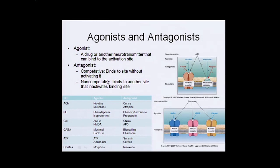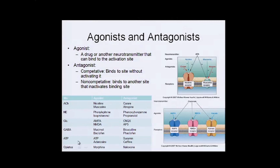Or it could be a non-competitive antagonist, where it binds to another site that causes a protein conformation change and makes it so acetylcholine can't bind. Then you have another example with glutamate, where you have various receptors where either the AMPA receptor and glutamate can bind and activate it, the NMDA and glutamate, or the kainate and glutamate can bind. And here's a list of some of the major neurotransmitters and their agonists and antagonists.